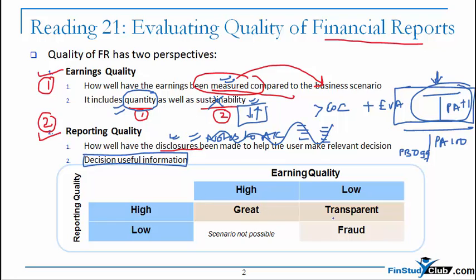This table captures four scenarios based on earnings quality (high or low) and reporting quality (high or low). If the earnings quality is high, the firm obviously will not be motivated for bad disclosure - there is a bona fide intention. With low quality there is a malafide intention. If the accountant is bold enough to measure earnings well, there is virtually no chance he will not show it properly. So the scenario of high earnings quality with low reporting quality practically doesn't exist.